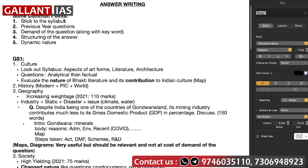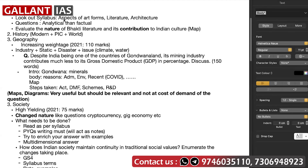The last common point is that the nature of question papers is very dynamic. You cannot assume that only economy questions will be in GS3. For example, this year gig economy and cryptocurrency were asked in GS Paper 1 also. There is a bit of dynamism being seen in the papers, so you have to learn how to use concepts across various papers. Now let's start with GS1, which basically has four parts: culture, history, geography, and society.